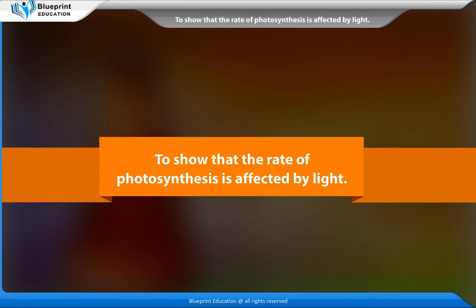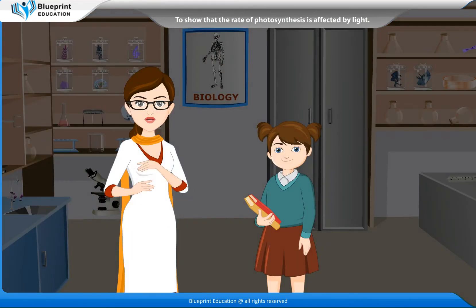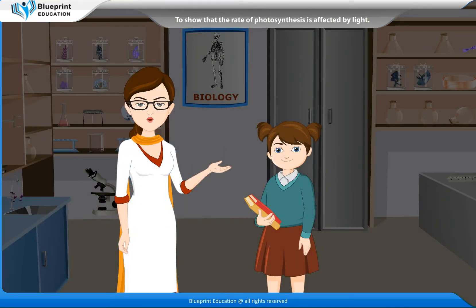To show that the rate of photosynthesis is affected by light. Green plants produce their own food in the form of glucose, which gets stored as starch by the process called photosynthesis.